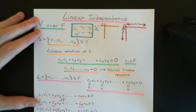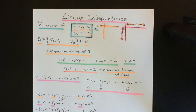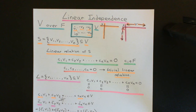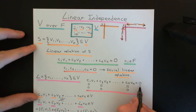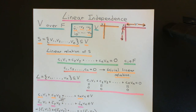Welcome back to this next video in which we are discussing linear independence. In the previous video, we saw the actual definition of a linearly independent set of vectors within a vector space V. A linearly independent set, which we'll call L, is a set of vectors for which the only linear combination of those vectors which gives the zero vector is the linear combination where all of the scalars are equal to zero in the field.